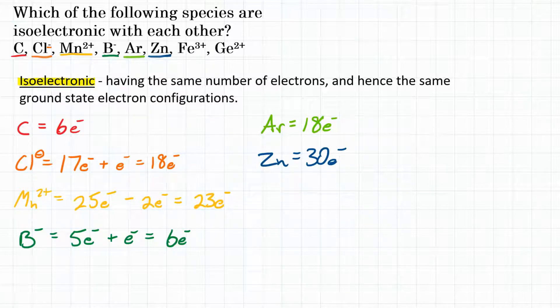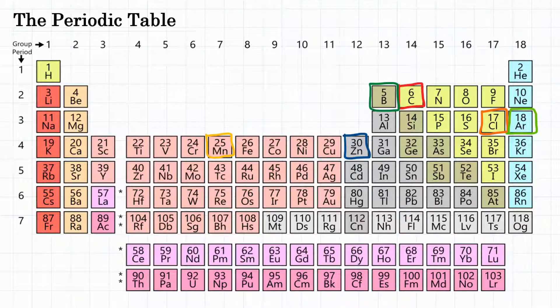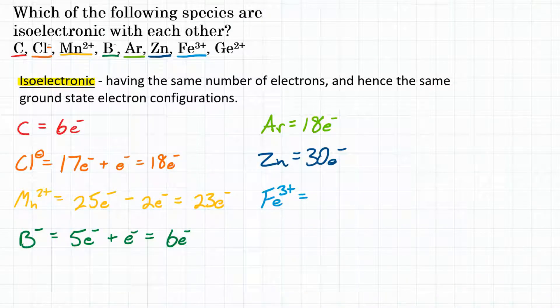Now we have iron 3 positive. Again, got to go back to the periodic table and find iron. Iron is right here, element number 26. Now 26 electrons, but it has a 3 positive charge. So that means we're going to subtract 3 electrons for a total of 23.